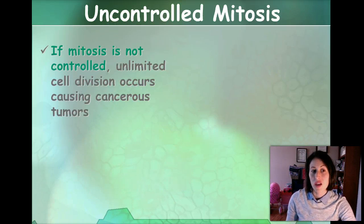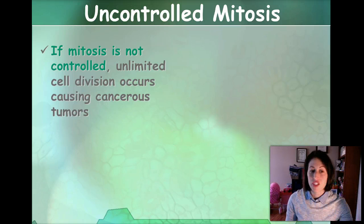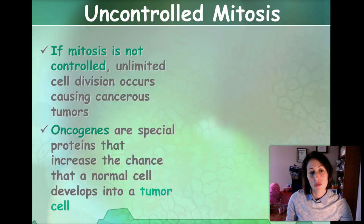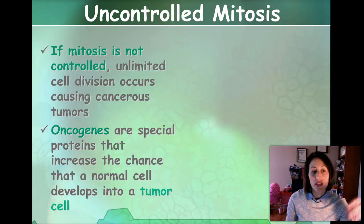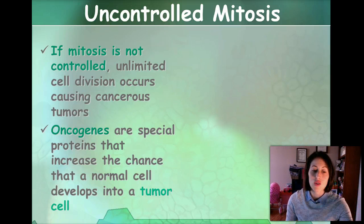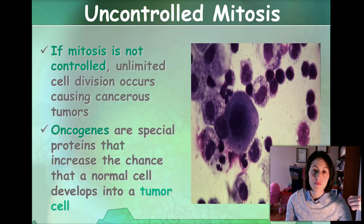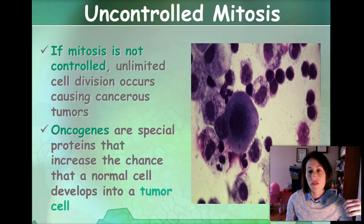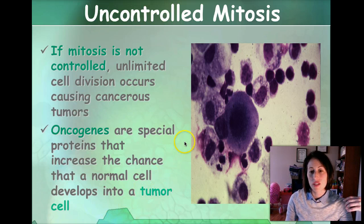Uncontrolled mitosis — unlimited cell division — is when cancerous tumors occur. There are things called oncogenes, which are special proteins that can increase the chance that a normal cell develops into a tumor cell. And this would be a picture of cancerous cells.